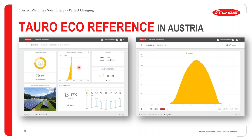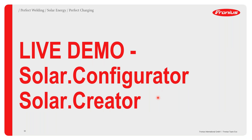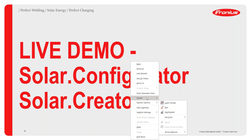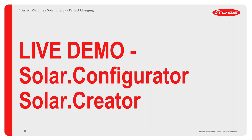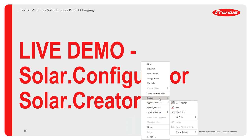Talking about data visualization — this is of course possible on Solar Web, where we can actually view the data. This is the particular data coming from the site, showing what it is generating at the moment and the percentage utilization. You can have a view of production and consumption data. As I earlier promised, we will be having a live demo of how the Fronius Taro ECO can be implemented — I'll quickly take us through these apps and show how they can be implemented.